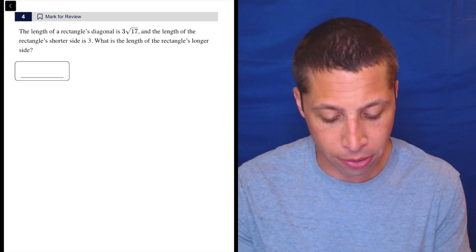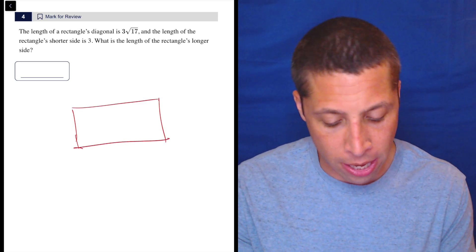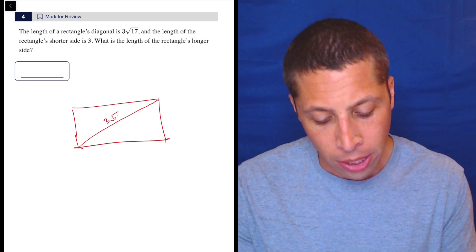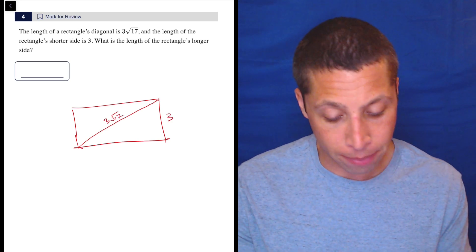So let's make a little bit of a rectangle here, and the diagonal is just connecting the opposite corners. So that's 3√17. And the length of the rectangle's shorter side is 3. What is the length of the rectangle's longer side?